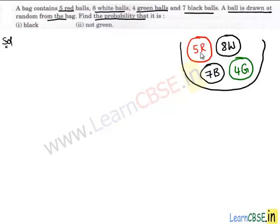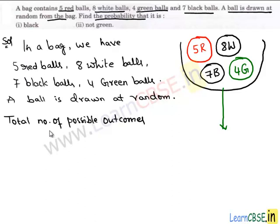Let's work out the problem. According to the question, we have five red balls, eight white balls, seven black balls, and four green balls in a bag. An experiment is performed — a ball is drawn from the bag — and the ball drawn may be either a red ball, white ball, black ball, or green ball. So the total number of outcomes of this experiment, n(S), is equal to the sum: five plus eight plus seven plus four, which equals 24.